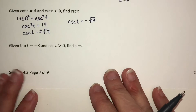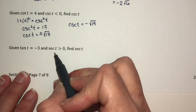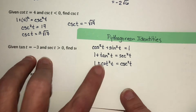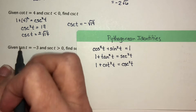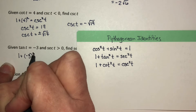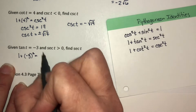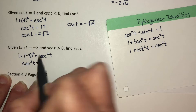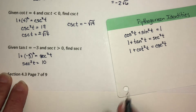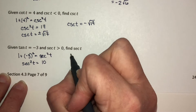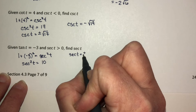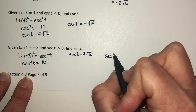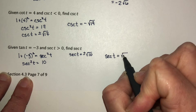If tangent equals negative 3 and secant is positive, we need to find secant. Secant and tangent are related by the Pythagorean identity. Plugging in: 1 plus (−3)² equals secant squared, so secant squared equals 1 plus 9, which is 10. Secant of t equals plus or minus the square root of 10, and the square root of 10 does not simplify. We want the positive answer, so secant of t equals the square root of 10.